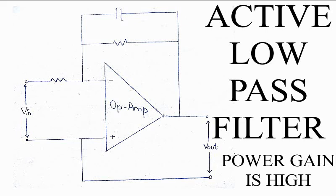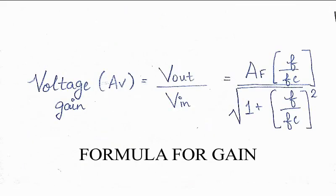If a voltage gain greater than 1 is required, we can adjust the following filter circuit. Gain of the first order low pass filter: voltage gain equals Vout divided by Vin, which equals AF divided by the square root of 1 plus (F divided by FC) squared, where AF equals the passband gain of the filter, F is the input frequency, and FC is the cutoff frequency.